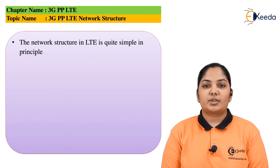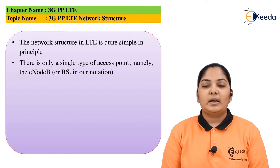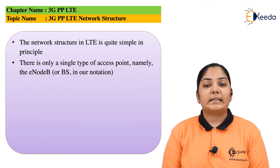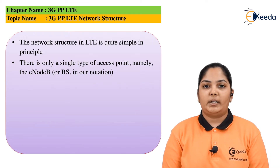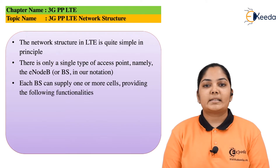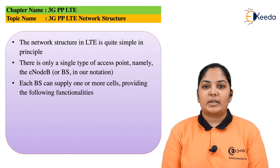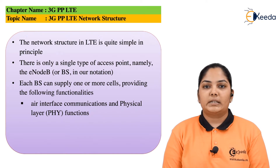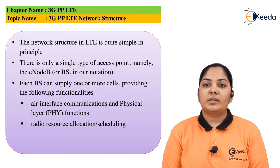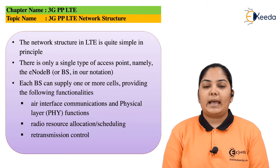The LTE Network Structure is extremely simple. There is only a single type of access point which is named as E-NodeB. This is nothing but the Base Station that we have been studying. Each Base Station can supply one or more cells, providing the following functionality: Air Interface Communication and Physical Layer, Radio Resource Allocation and Scheduling, and Retransmission Controlling.